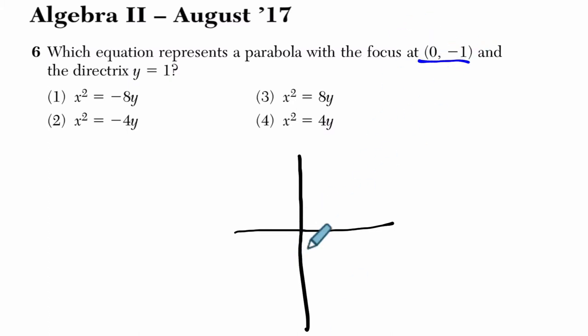So color code that blue. Let's say it's here. And that's my focus. And then what else are we told? We're told the directrix is at 1. It's up here. This is our directrix up here. So y equals 1, that's our directrix.